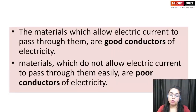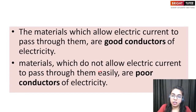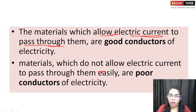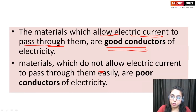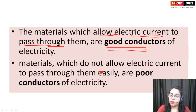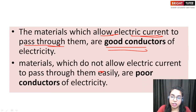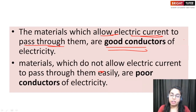Let us move ahead and discuss about what are good conductors and what are insulators. The materials which allow the electric current to pass through them are known as good conductors of electricity. Mostly metals are good conductors of electricity. Water is also a good conductor, but distilled water will not be a good conductor because normal water has ions in it which help in conduction, whereas distilled water is the purest form and does not have those ions. That is why distilled water does not conduct electric current.